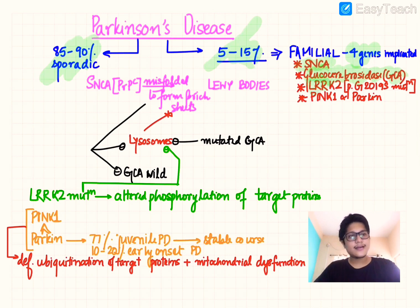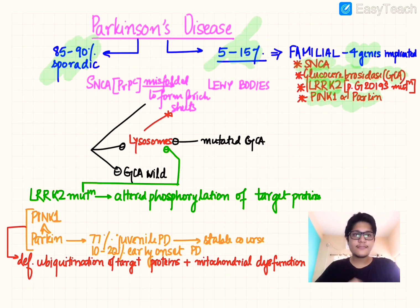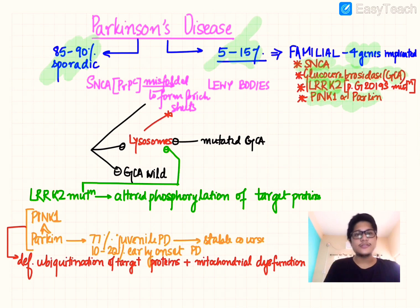Then there is the LRRK2 gene, which is implicated in a particular population known as Ashkenazi Jews, and finally the PINK1 and Parkin genes. These are the four or five genes implicated in Parkinson's disease.